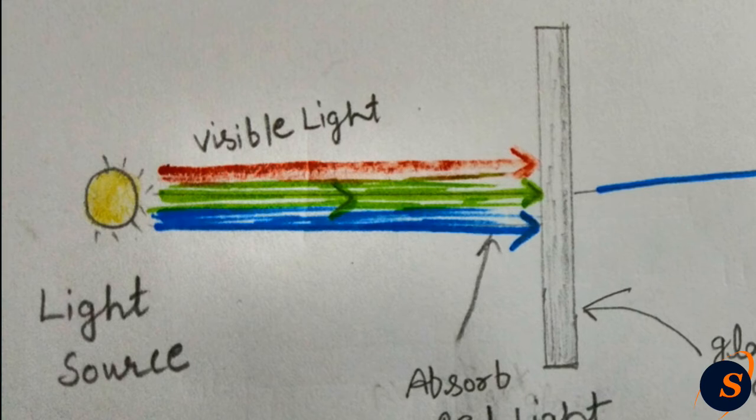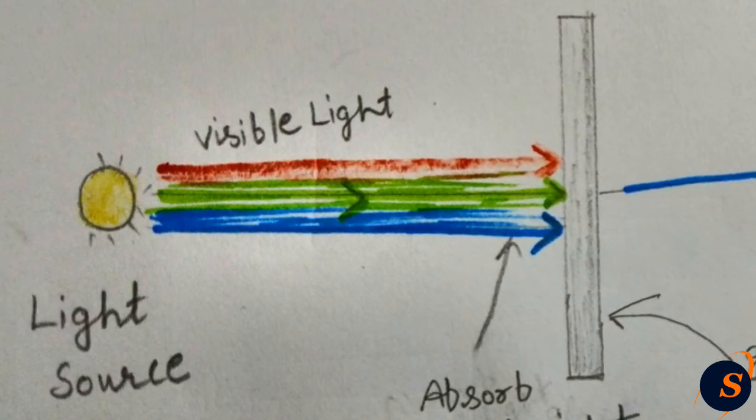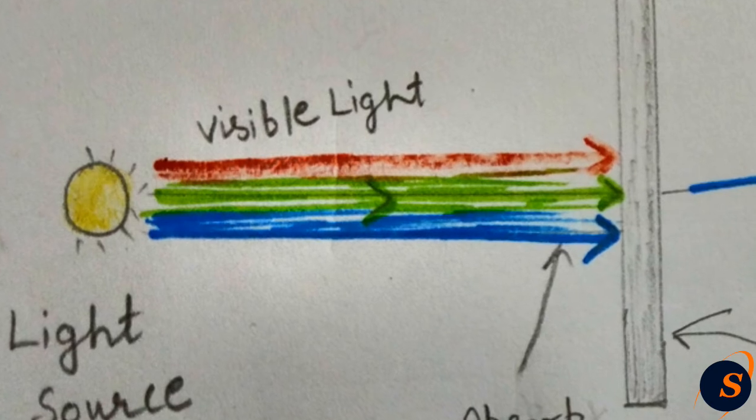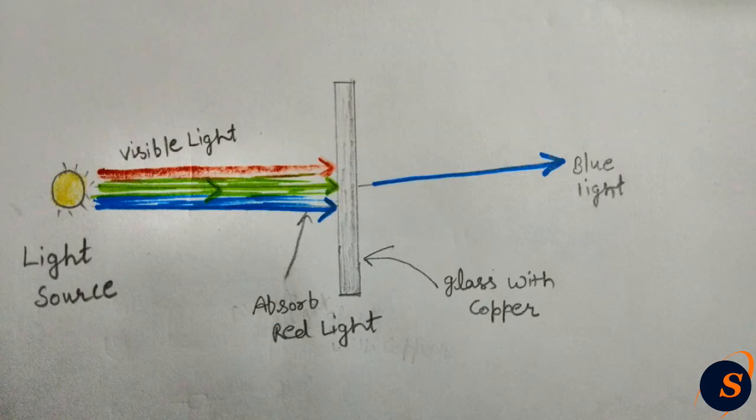If you add certain materials to the glass, you can change the energy level of electrons in the glass. For example, if we add copper to a glass to absorb light in the red end of the visible spectrum...